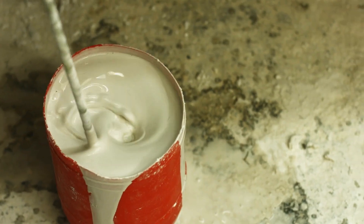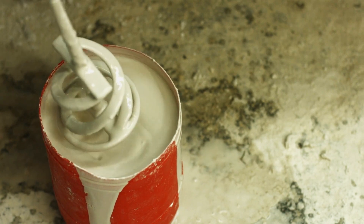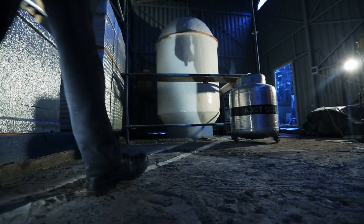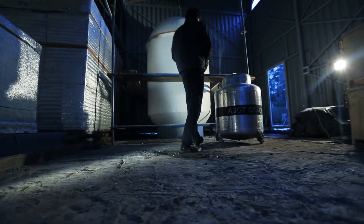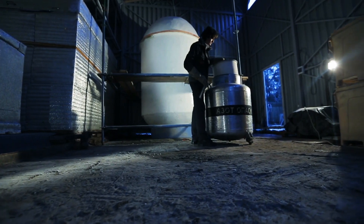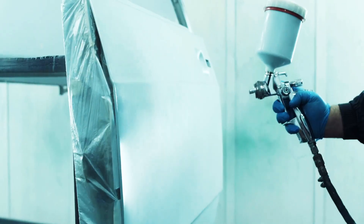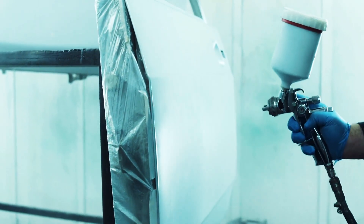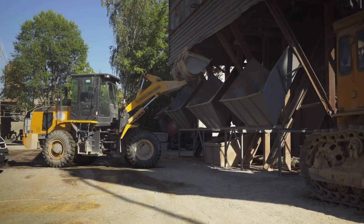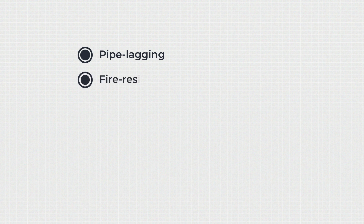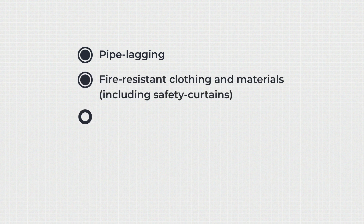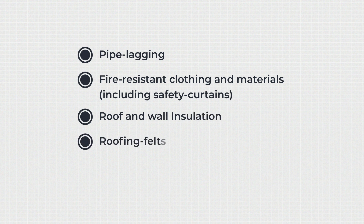Asbestos was significantly used in construction when fibres were mixed with other building substances to make commercial ACM, asbestos containing material. The fibres can also be found present in some spray painting and cement, as well as in pipe lagging, fire-resistant clothing and materials including safety curtains, roof and wall insulation, roofing felts, shingles and tiling, and strong ropes.